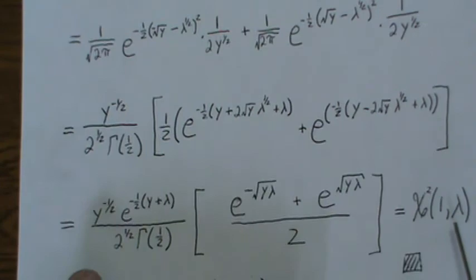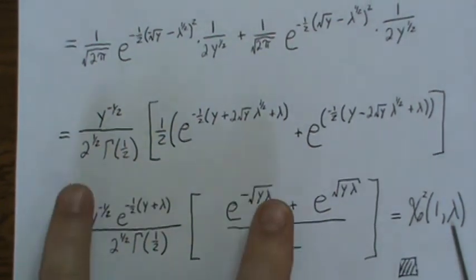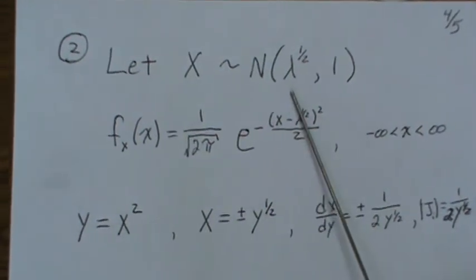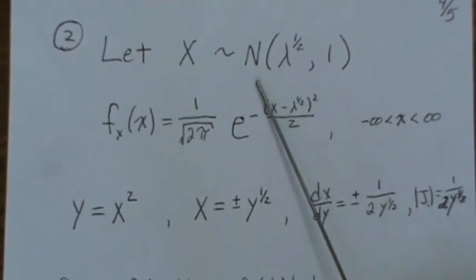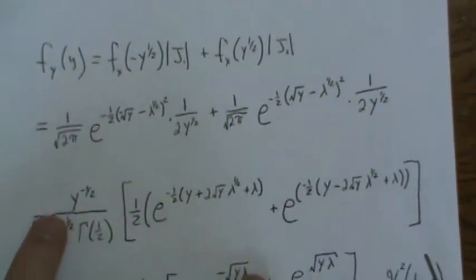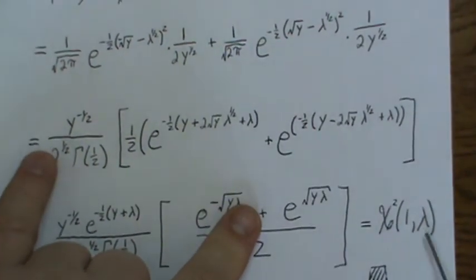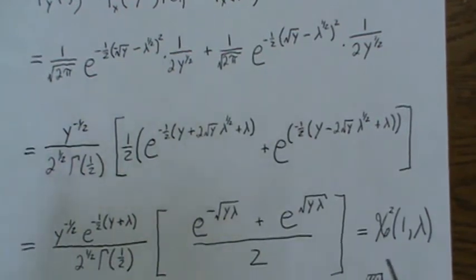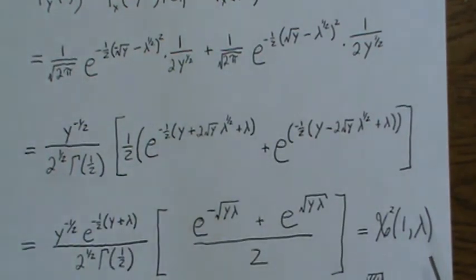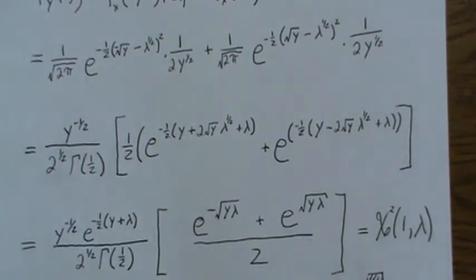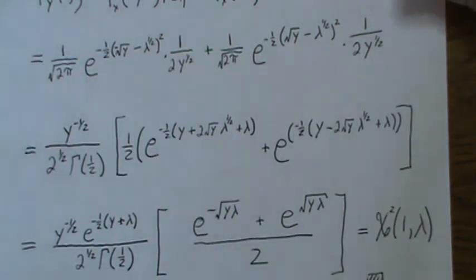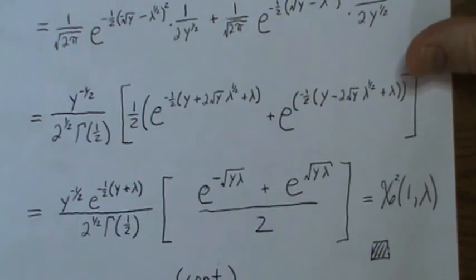Now one quick note is that you will often see this as μ, normal(μ, 1), and this would be μ². That's probably the common way to see this, but this notation I'm using because it's going to help me develop the general non-central chi-square distribution. So we're done.